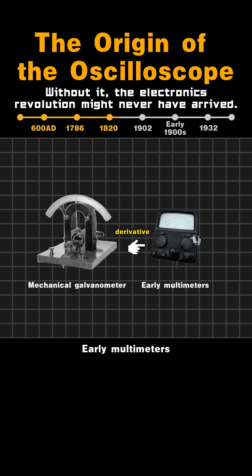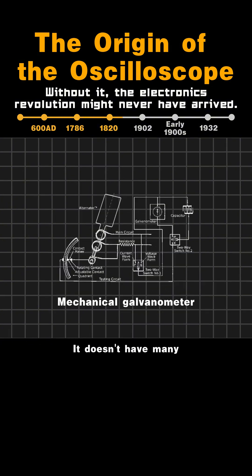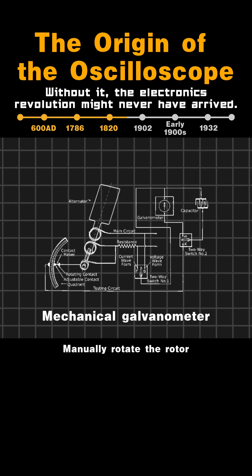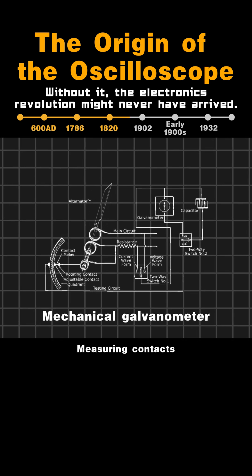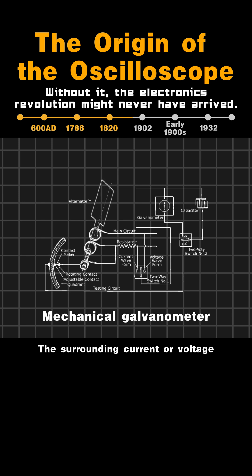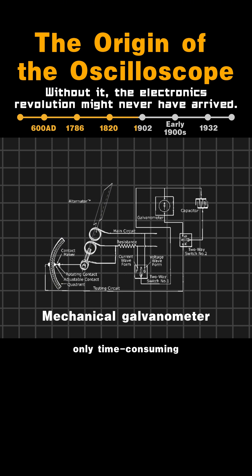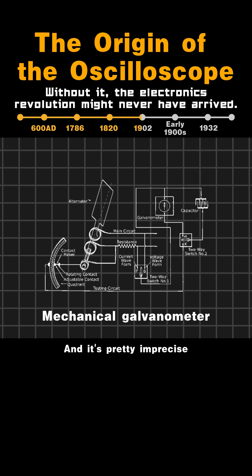Early multimeters derived from this did not have many internal components. You had to manually rotate the rotor during measurement, and measuring the surrounding current or voltage all needed to be done manually. This was not only time-consuming and tedious, but also pretty imprecise.